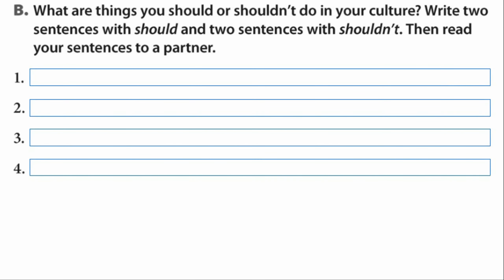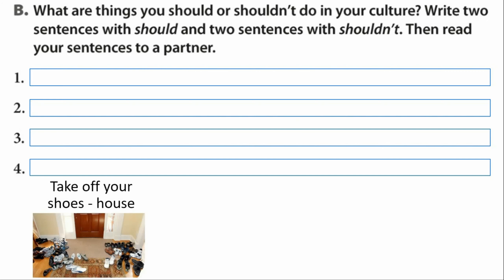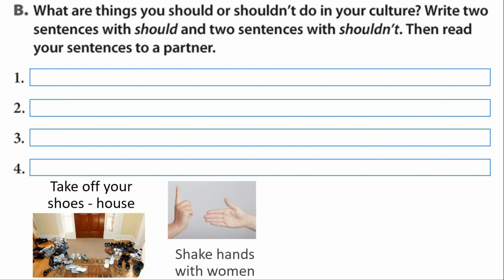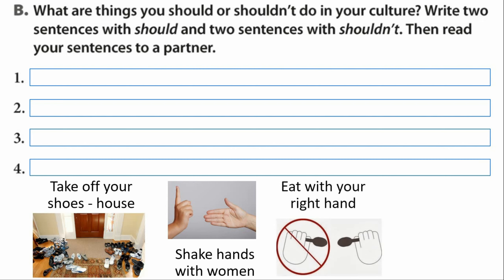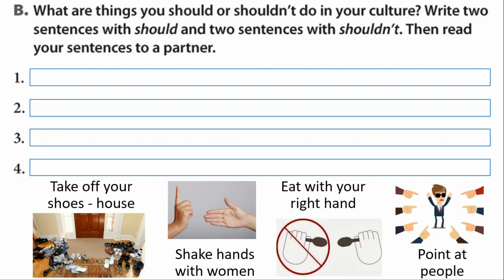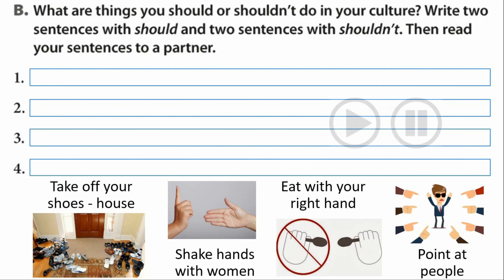Now I would like to talk with you about your culture — the Saudi culture. What are things you should or shouldn't do? I would like you to use one of these four phrases: take off your shoes, shake hands with women, eat with your right hand, or point at people. Use two sentences with should and two sentences with shouldn't. Please pause this video and write down your answers in your book or on a piece of paper and show them later to your teacher.